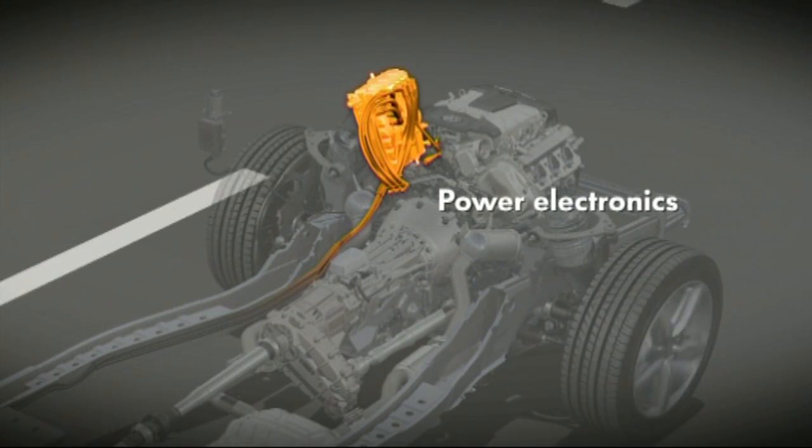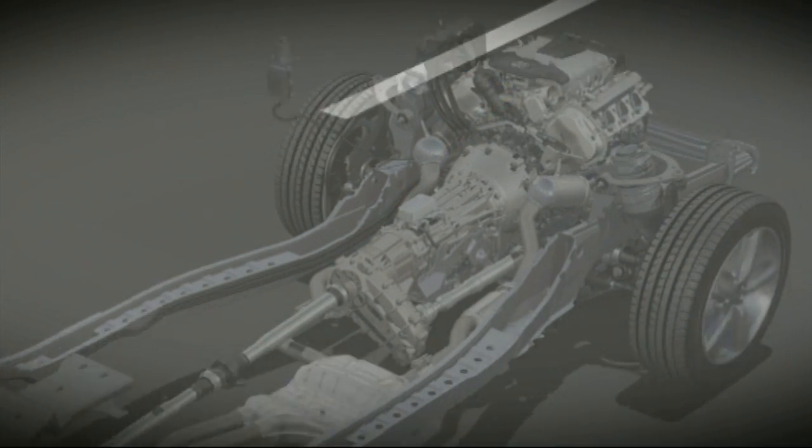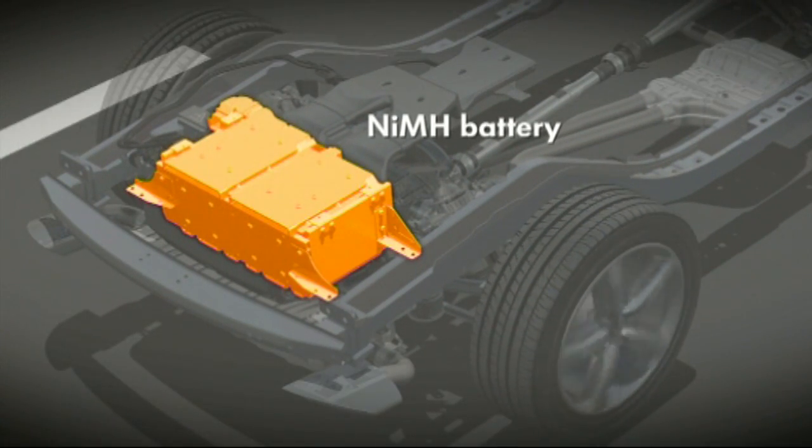The intelligent power electronics ensure that the correct current flows at all times, both when driving with the electric motor and when charging the battery. The electric motor gets the necessary voltage from the high-voltage battery. When the driver brakes, the kinetic energy is recovered and stored here.